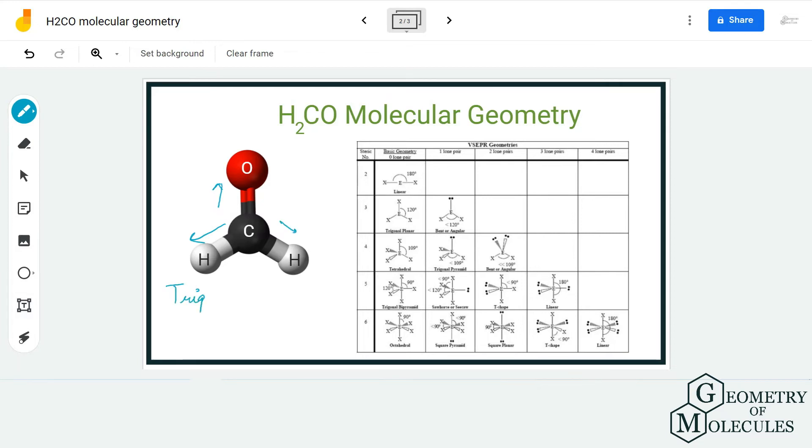This is the shape of the H2CO molecule, and as all the atoms are spread out evenly, the molecular geometry seems to be trigonal planar. We can confirm it further by using the steric number formula.